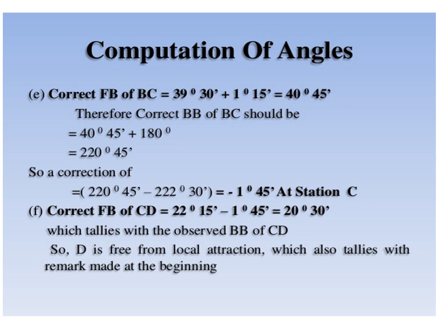We apply this correction to the fore bearing of line CD. So corrected fore bearing of CD equals 224 degrees 45 minutes minus 1 degree 45 minutes. The minus correction is applied because the observed bearing is more than the corrected bearing. So the corrected fore bearing of CD is 223 degrees, which tallies with the observed back bearing of CD. This confirms that D is free from local attraction, which also tallies with the remark at the beginning.